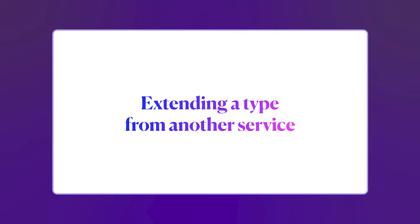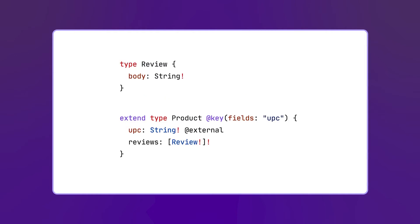So now we are able to extend the product type from the reviews service. We still have the review type, but we also have a new product type with a UPC field and a reviews field. The first thing is that we're declaring the product type as an extension using the extend keyword — this tells Apollo Federation that this type is an extension of the original product type. We're also passing the @key directive again to match the key defining the original type. We also have a UPC field marked as @external, which tells Federation that this field is coming from another service.